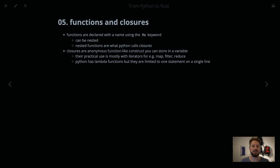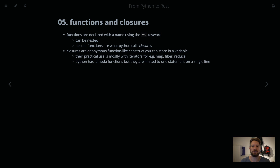In both languages functions can be nested, and nested functions are more or less called closures in Python — that's a big difference. Closures, by definition of the Rust community, are anonymous function-like constructs that you can store in a variable. To do this in Python you'd use a lambda function, but lambdas have the limitation of being allowed only one statement and must be on a single line.